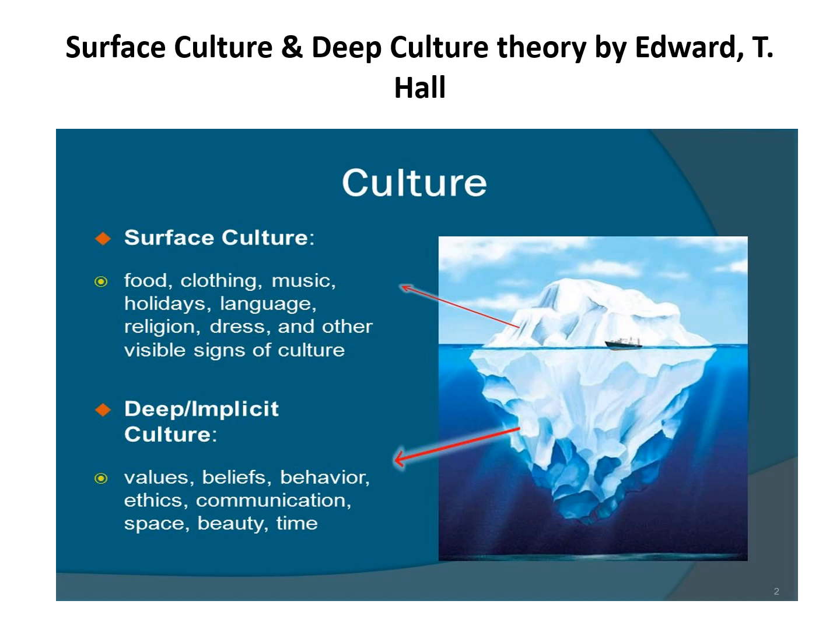This theory was given by Edward T. Hall, and it uses the image of an iceberg. The upper part at the surface level — that which is visible — represents only about 10% of the culture. This is called surface culture, or objective culture, and it includes things like food, clothing, music, holidays, language, religion, dresses, and other visible signs. Deep culture is called implicit culture, whereas surface culture is called explicit — meaning visible, or without any ambiguity.